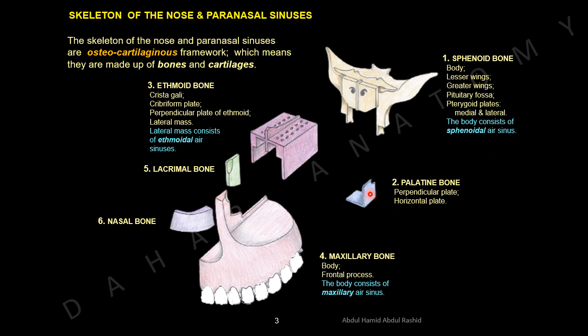The body of the sphenoid contains the sphenoidal air sinus. The second bone is the palatine bone, which has two parts: the perpendicular plate of the palatine bone and the horizontal plate of the palatine bone.